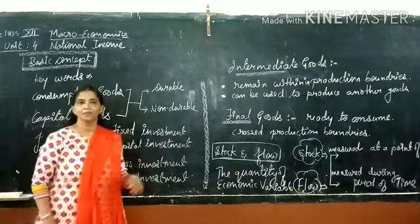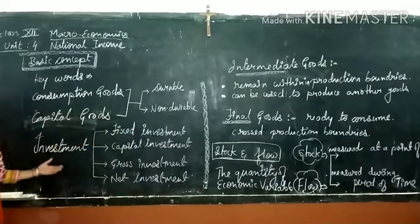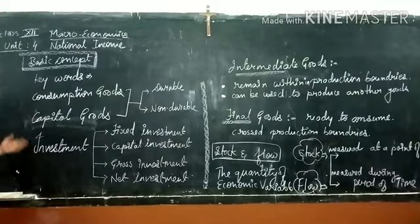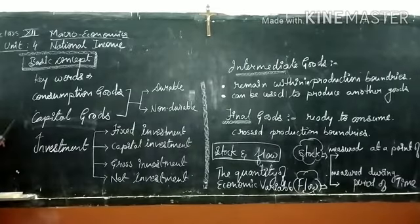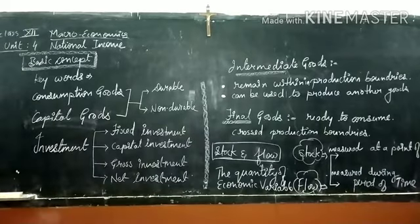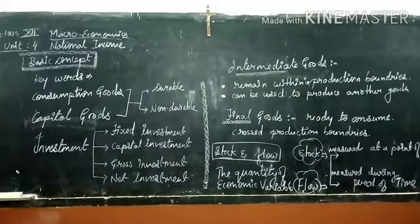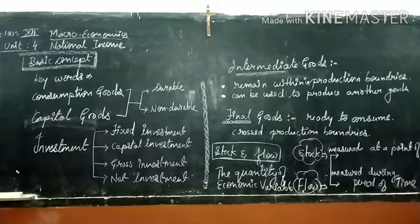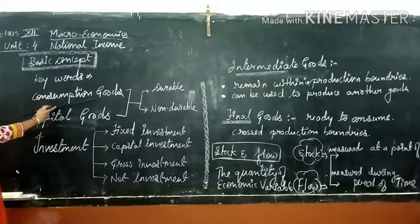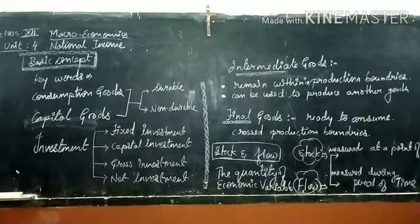Hello students. Before starting my new lecture, I would like to revise all those topics or definitions which I have explained in my last video. First one is consumption good. Second is capital good. Consumption goods are those type of goods which are used by the end user to satisfy their needs and desires.